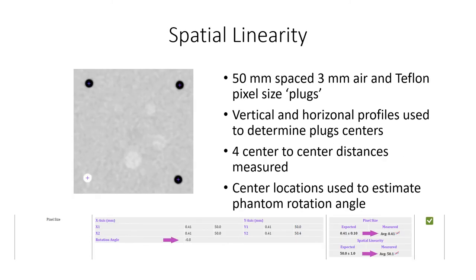For the spatial linearity evaluation, two measurements are reported: pixel size and the measured average distances between the four pixel size test plugs. The pixel size plugs are used for verification of the expected pixel size as stored in the DICOM tag for pixel spacing. The center locations of the pixel size plugs are determined from a center of mass calculation of a vertical and horizontal profile through the target plugs. The center-to-center distances are reported as spatial linearity.